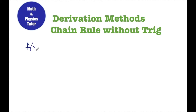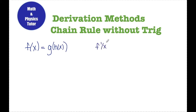So first, what is the chain rule? If I have a function that's a nested function or a composition of functions — say f of x is of the form g of h of x — then f prime of x, or the derivative of f, is going to be equal to g prime of h of x times h prime of x.